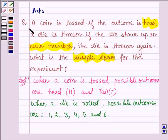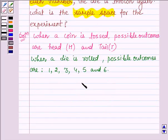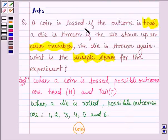Now let us see the question. A coin is tossed. Suppose this is a coin. It is tossed. Then either a head will come or a tail will come. Now it further says, if the outcome is head, a die is thrown and if the die shows up an even number, the die is thrown again.